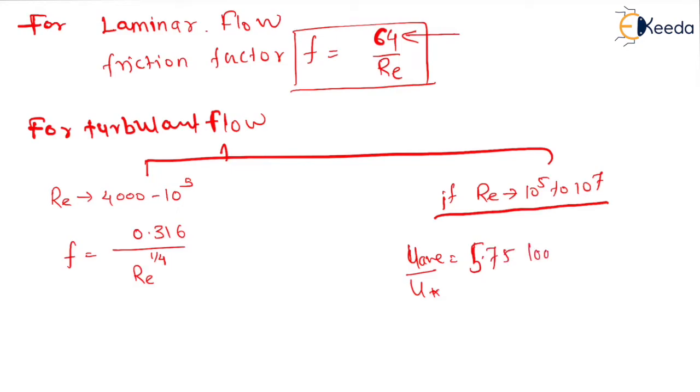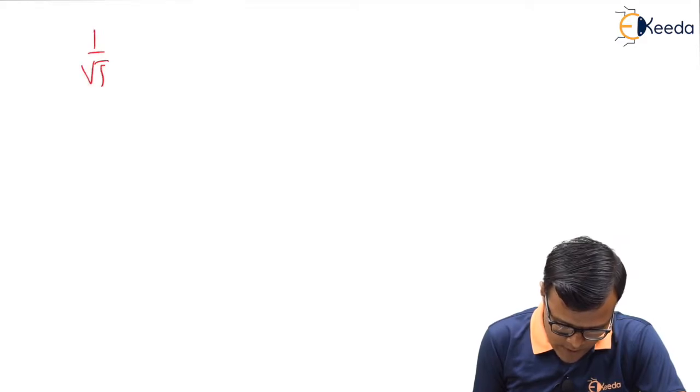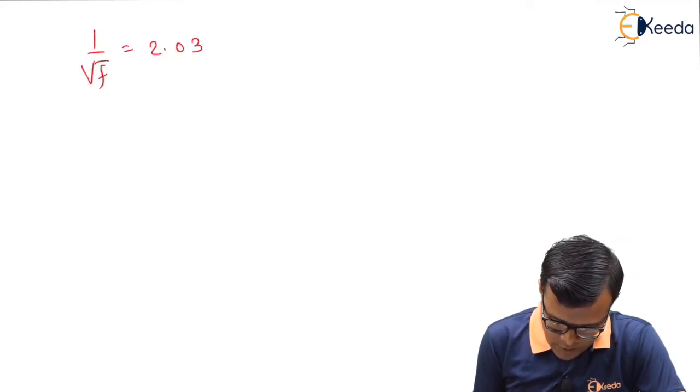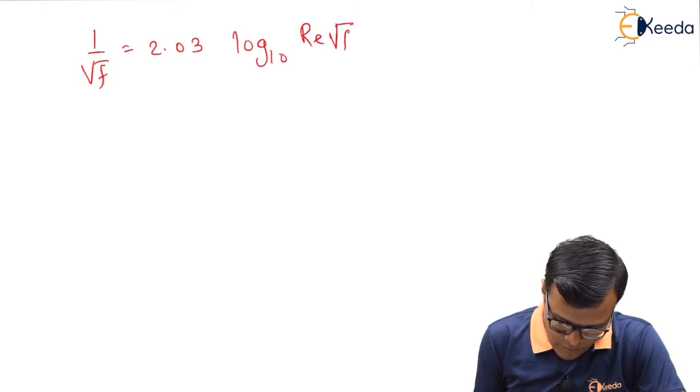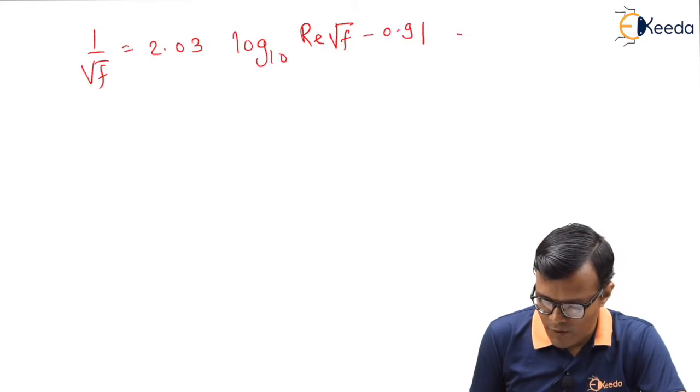log to the base 10 u star into R upon nu plus 1.75. So we have relation u star is equal to u average under root F upon 8. So we can have value of F as 1 upon root F is equal to 2.03 log to the base 10 Re under root F minus 0.91.